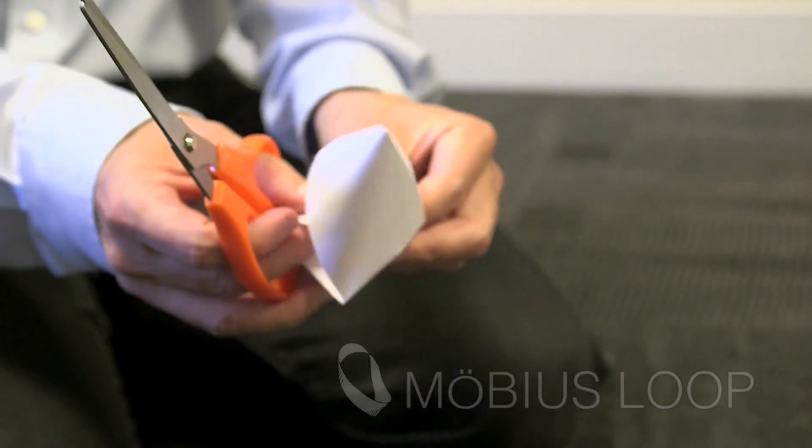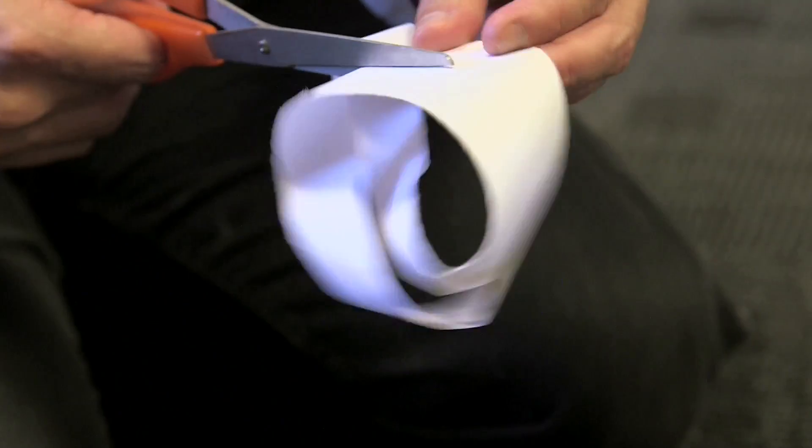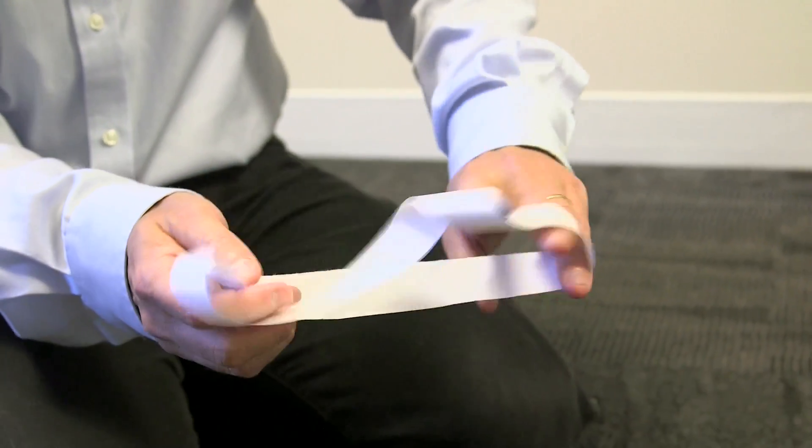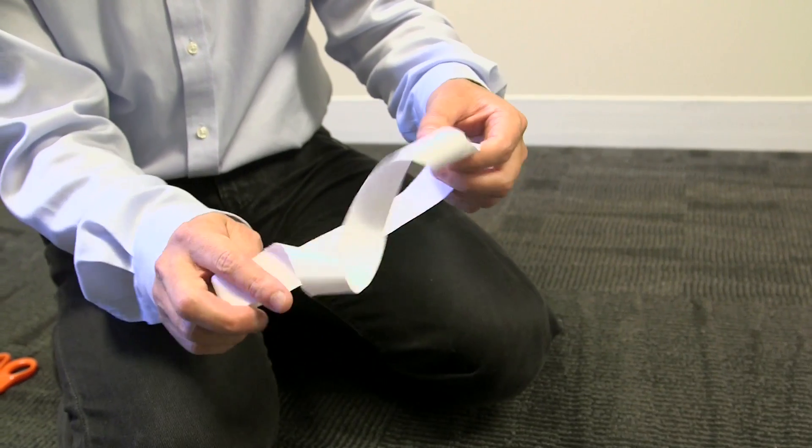What's going to happen if we cut this along the center line? And unlike the previous case, it does not fall into two pieces.